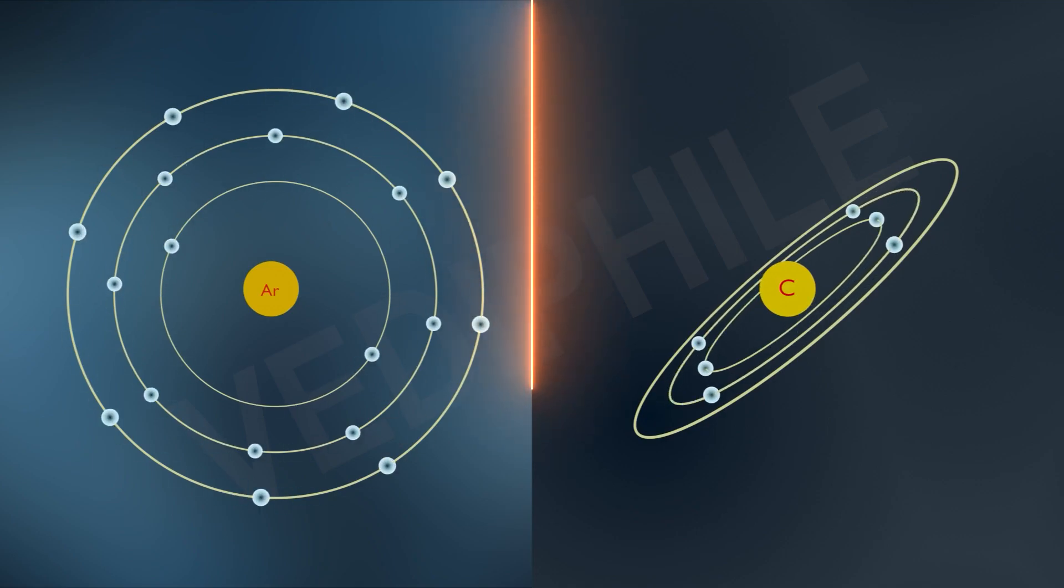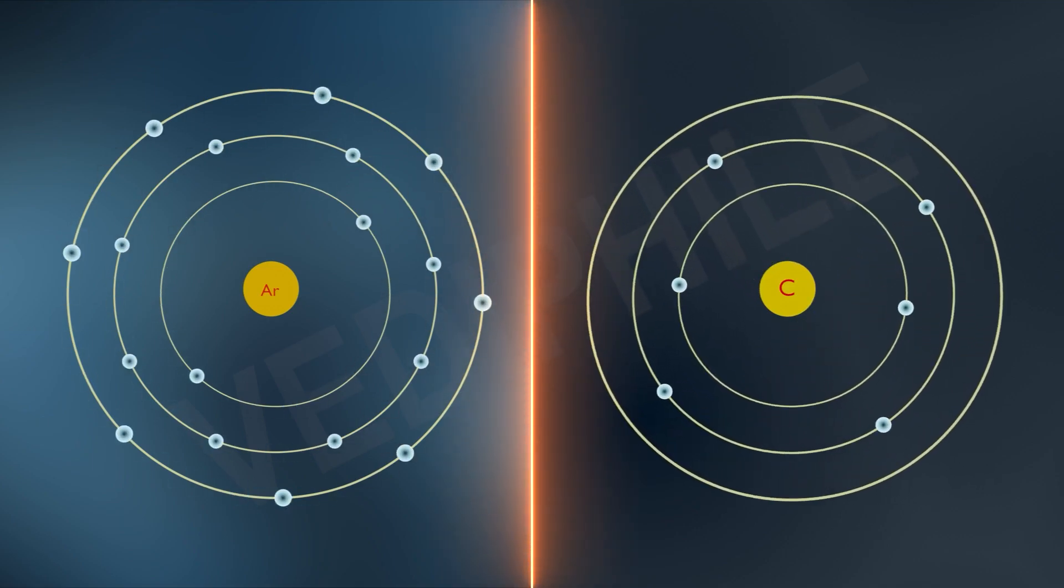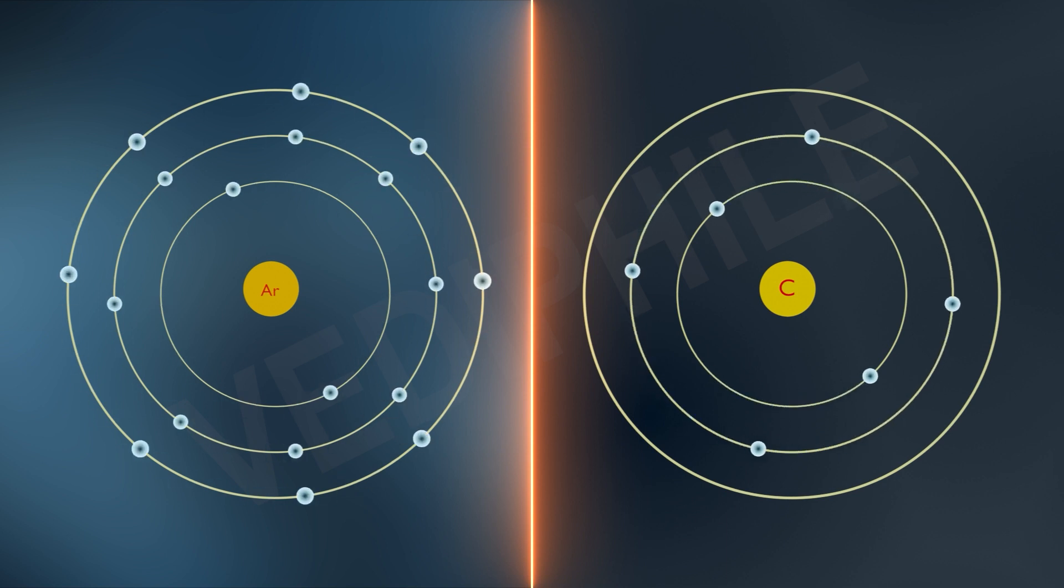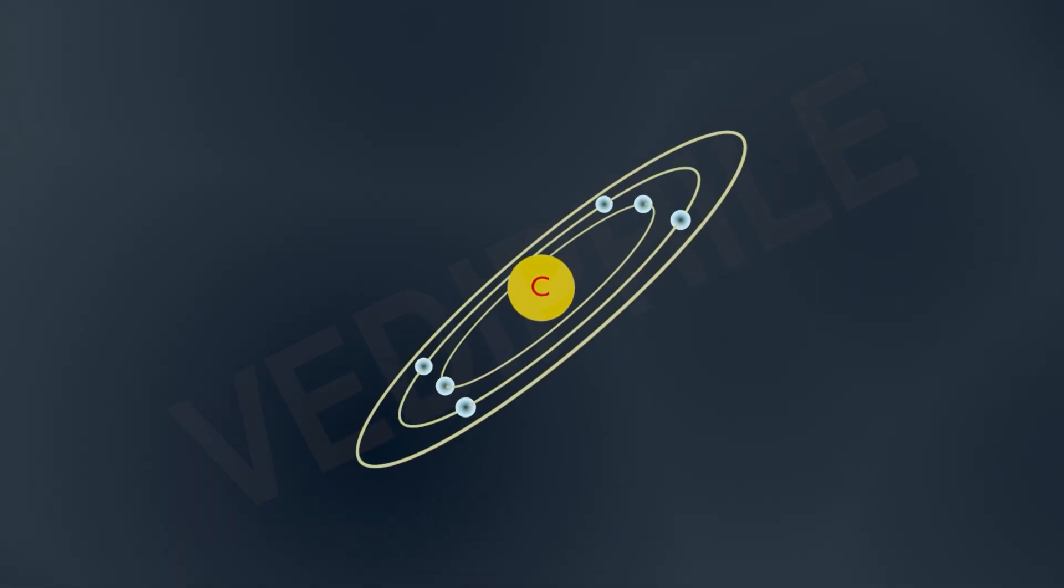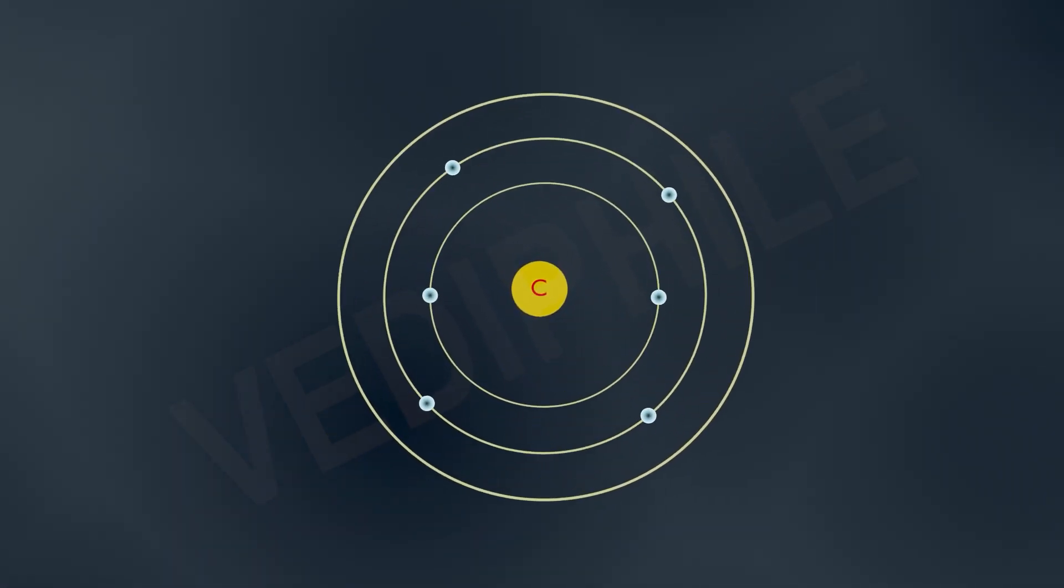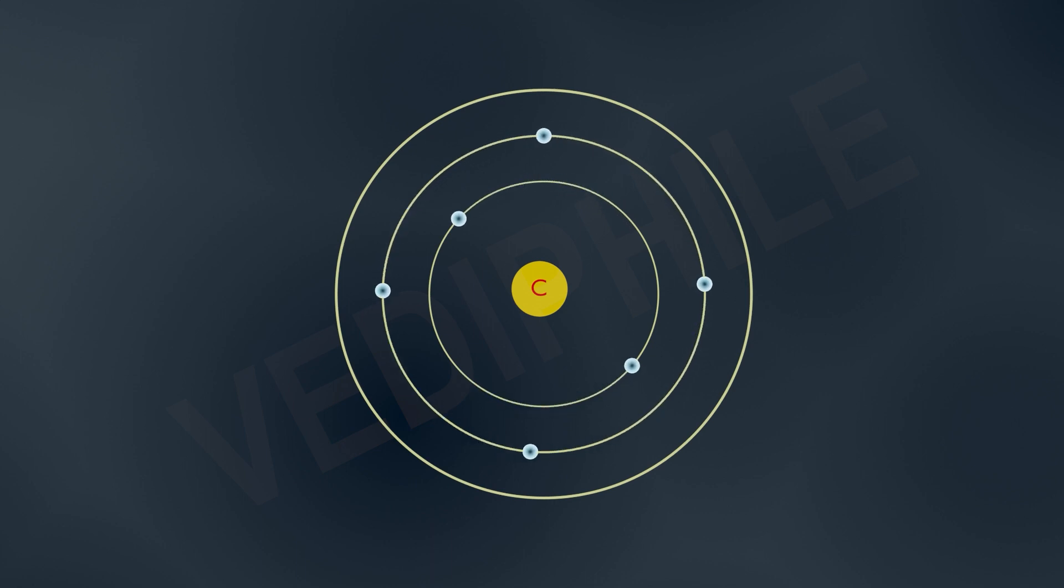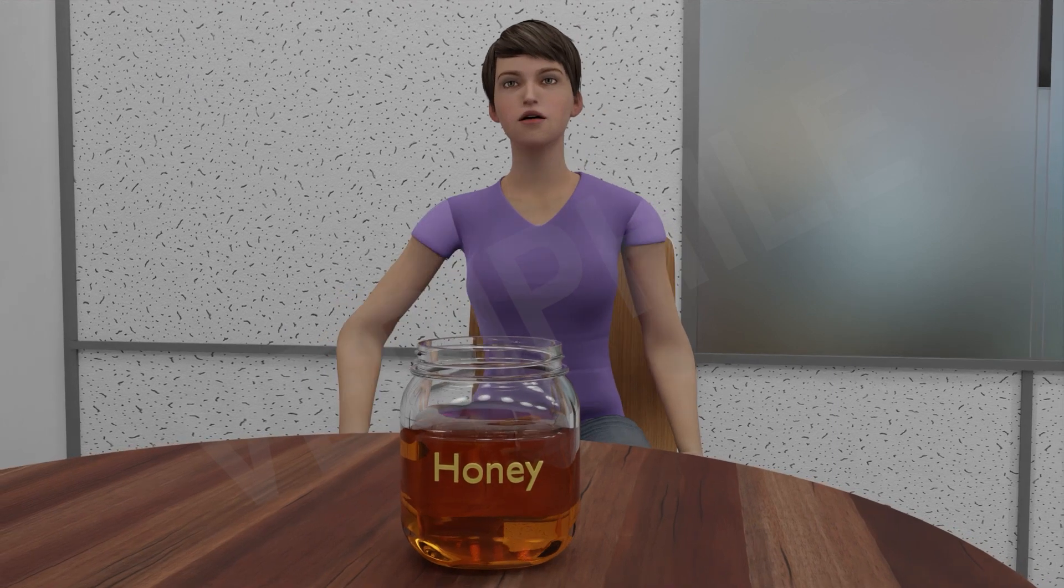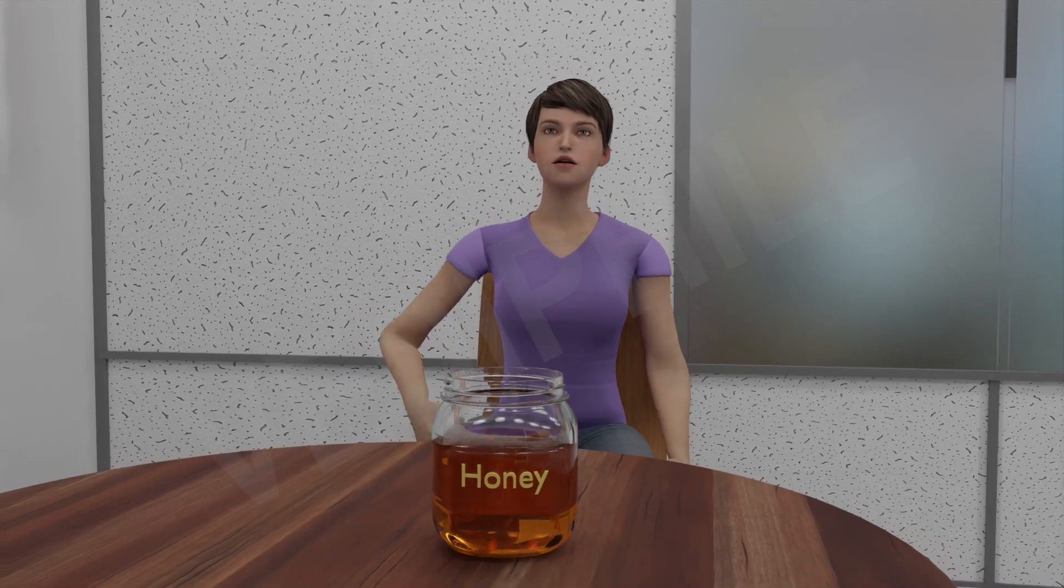To attain the noble gas configuration, carbon requires 4 additional electrons. Elements forming ionic compounds achieve this by either gaining or losing electrons from the outermost shell. In the case of carbon, it has 4 electrons in its outermost shell and needs to gain or lose 4 electrons to attain noble gas configuration. What happens if 4 electrons lose or gain?